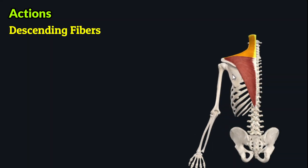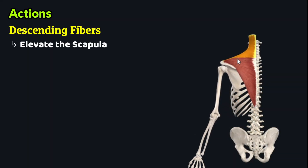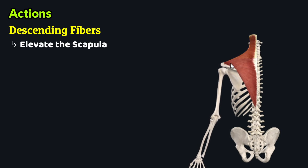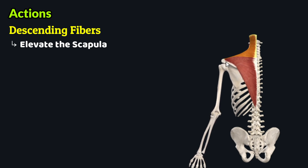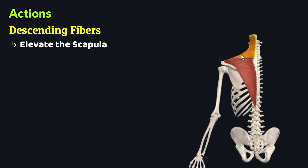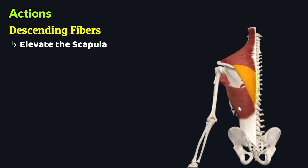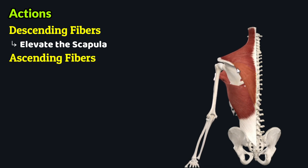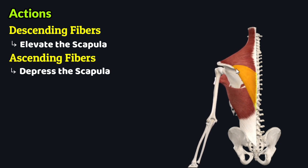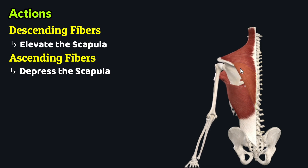The descending or superior group of fibers elevates the scapula, or elevates the shoulder girdle. These fibers act on the acromion of the scapula, and by contraction they elevate the scapula, as you can see. The ascending or inferior group of fibers depresses the scapula. These fibers act on the spine of the scapula, and by contraction they depress the scapula, as you can see.